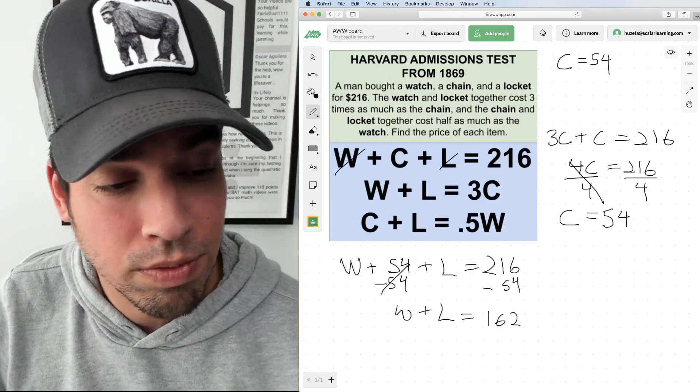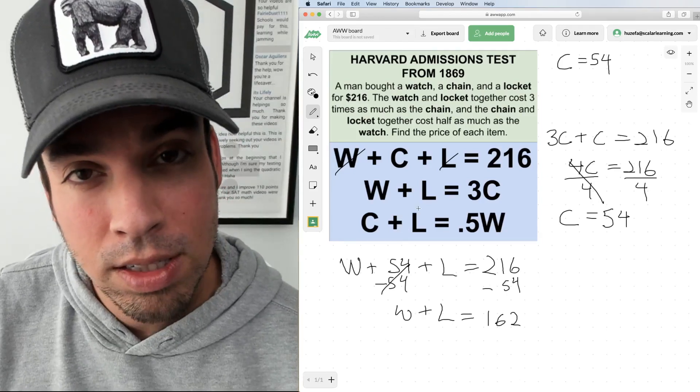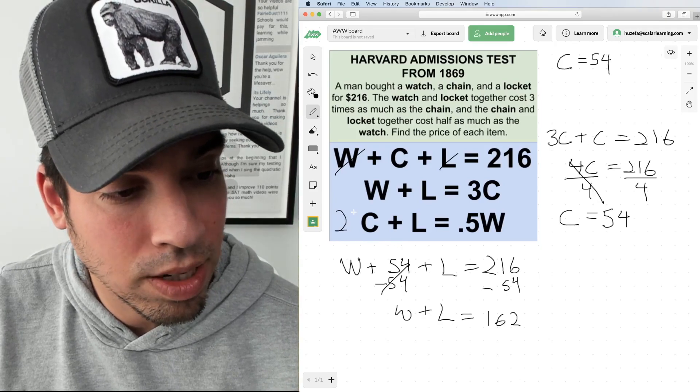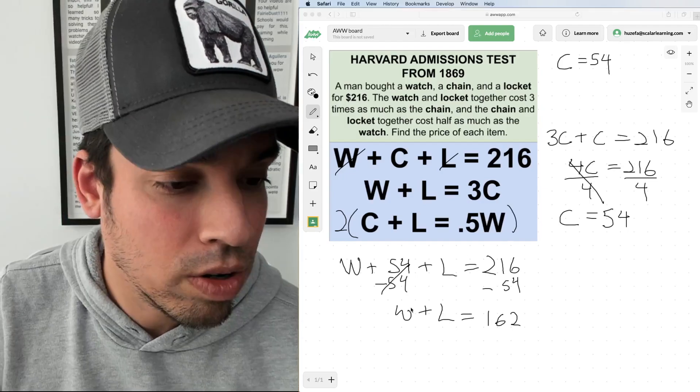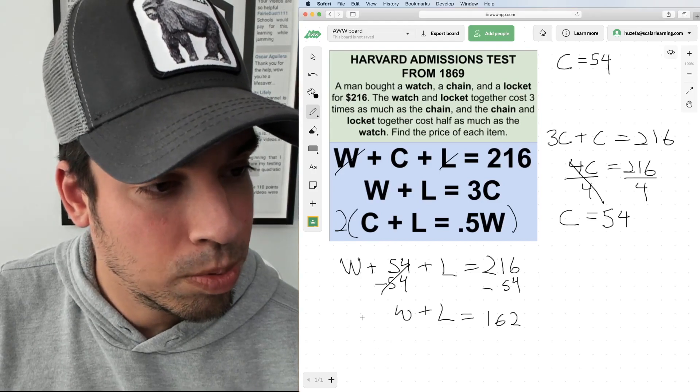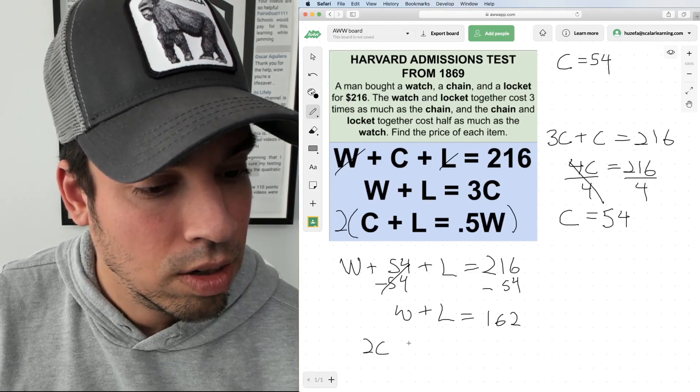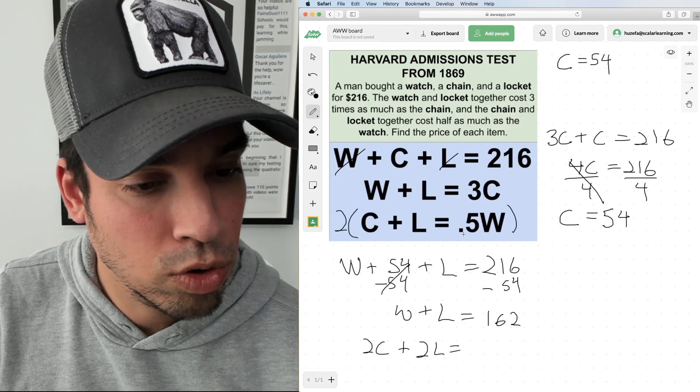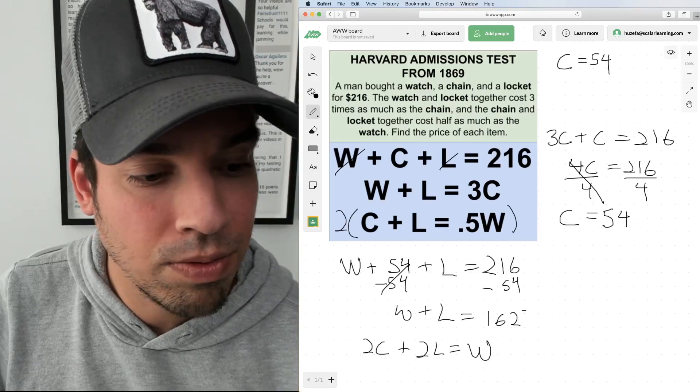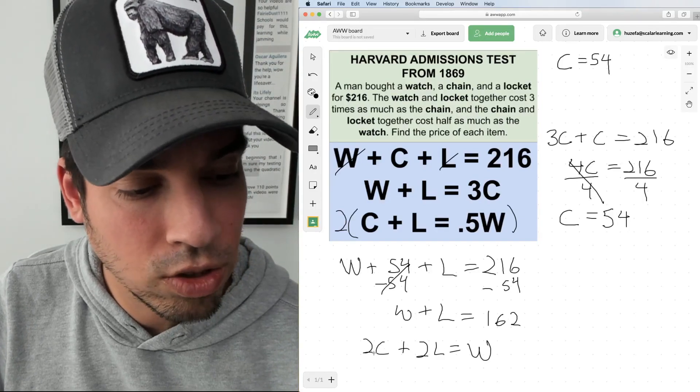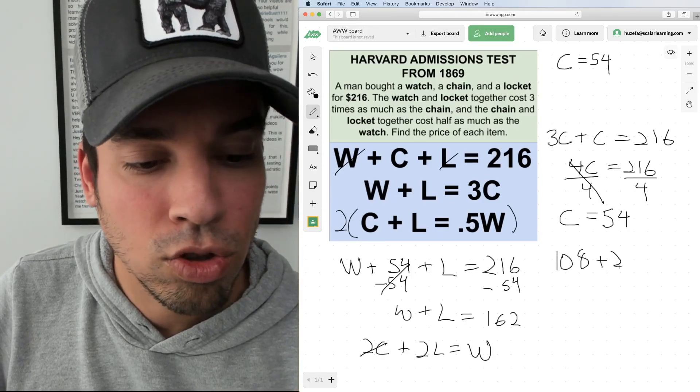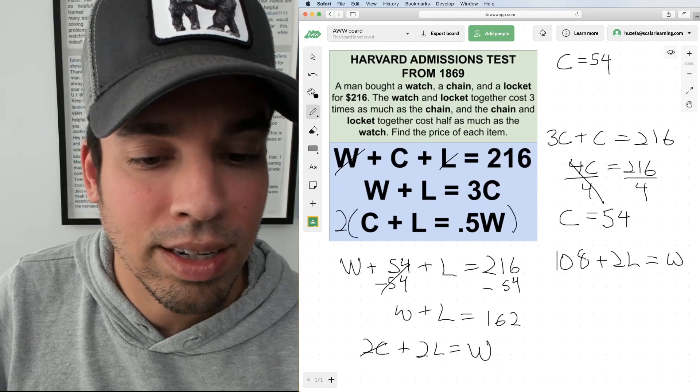I don't really want to deal with decimals and fractions, it makes these equations harder to use. But the nice thing is I can always multiply this entire equation by two. When I multiply it by two, I've got 2C plus 2L equals W. That's pretty nice. And I can substitute in 54 for C, so 2 times C is 108. I'm going to write that over here: 108 plus 2L equals W.